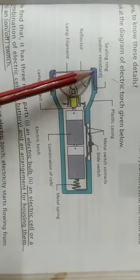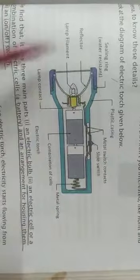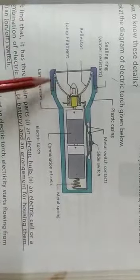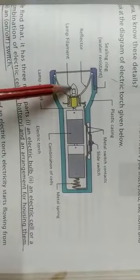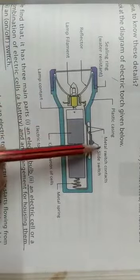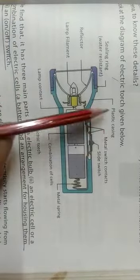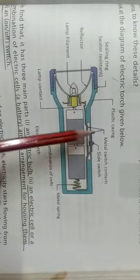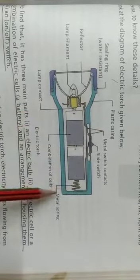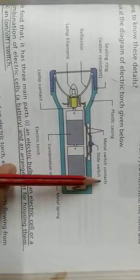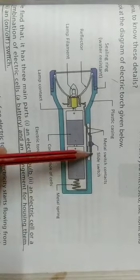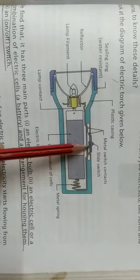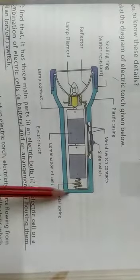The electric torch is made up of a cell, wire, resistance, and this is the reflector. This is the lamp filament, plastic casing, metal switch contacts, slide switch to switch on and off, metal spring, and two cells connected.